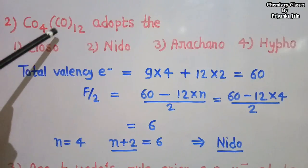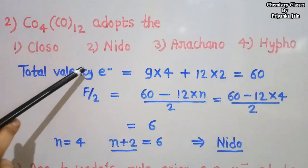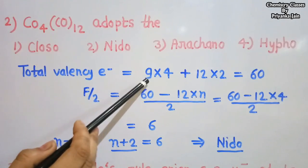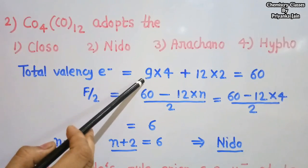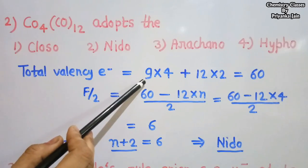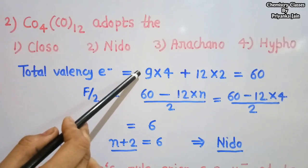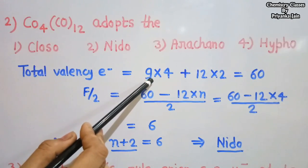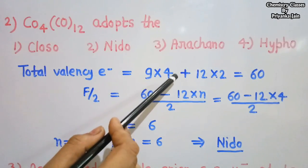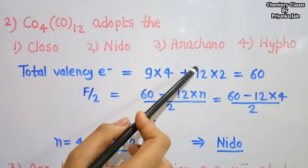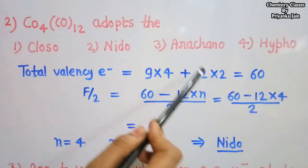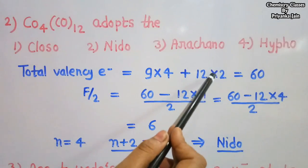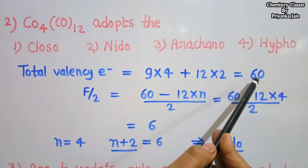In the case of Co4(CO)12, the total valence electron count is given by 9×4 (cobalt has 9 valence electrons: 7 from the d orbital and 2 from the s orbital, and there are 4 cobalt atoms), plus 12×2 for the 12 carbonyl ligands. The total electrons are 60.